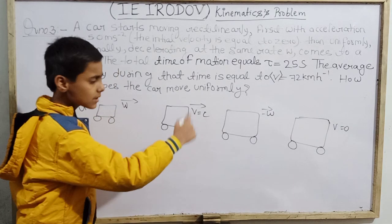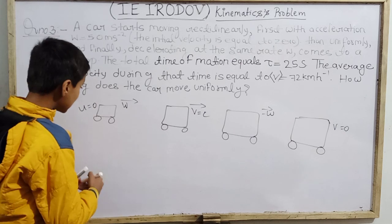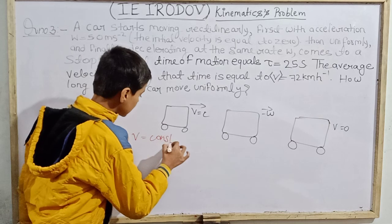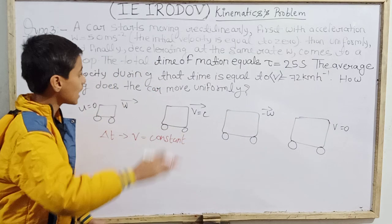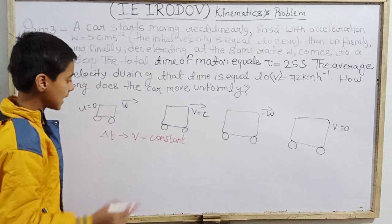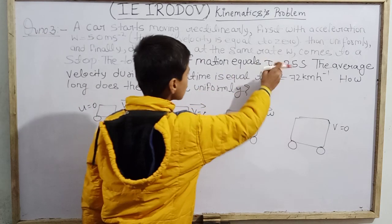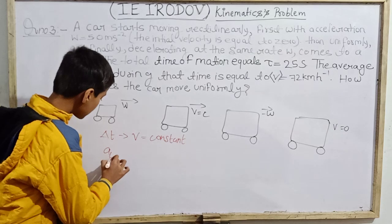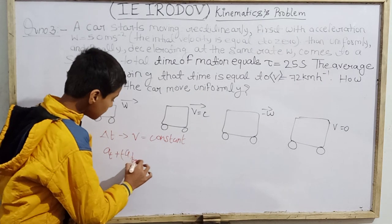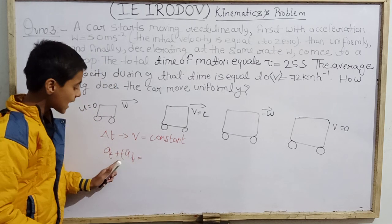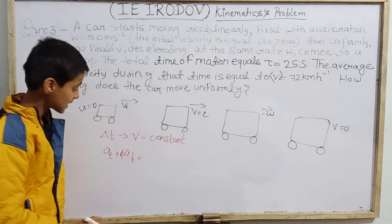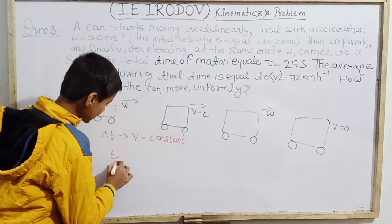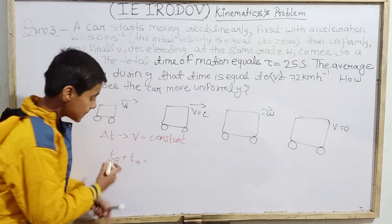Let delta T be the time during which the car moves with uniform (constant) velocity. Tau is the total time of motion. Since acceleration time equals deceleration time, if I add both times together, the combined acceleration plus deceleration time equals tau minus delta T. So the time of acceleration alone is (tau minus delta T) divided by 2.